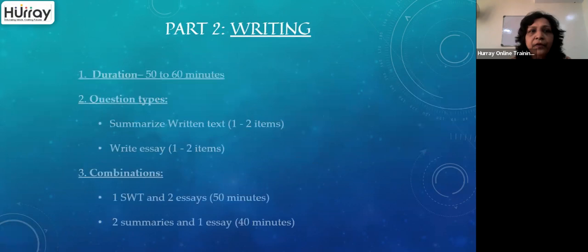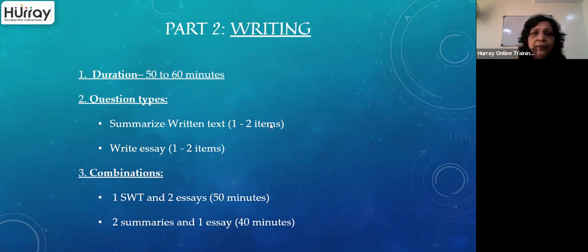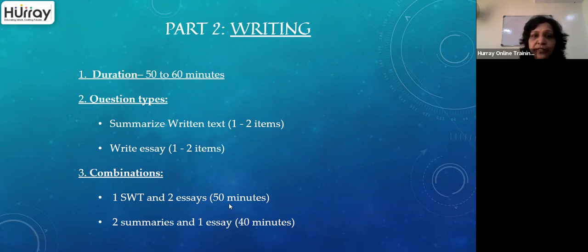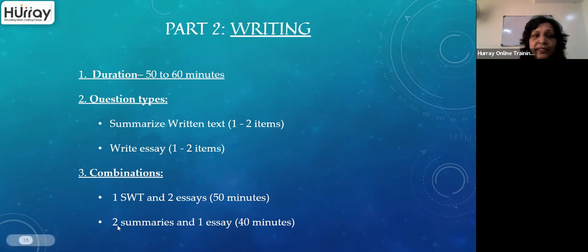Now we come to the writing module. There are two tasks: summarized written text and essay writing. The total duration for writing alone is 50 to 60 minutes. One summarized written text task takes 10 minutes and one essay writing task takes 20 minutes. You may get one SWT and two essays (totaling 50 minutes) or two SWTs and one essay (totaling 60 minutes).